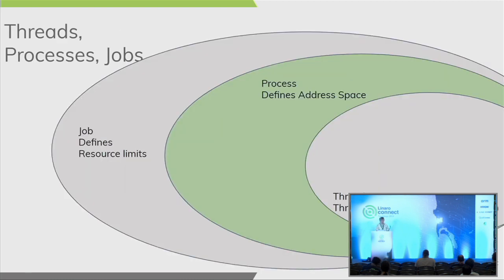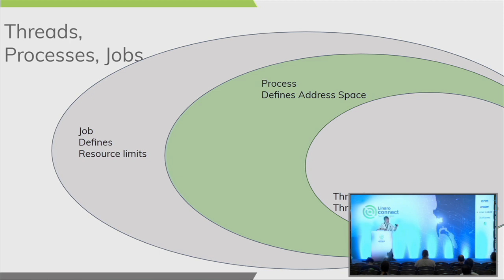Let's talk about threads, processes, and jobs. A thread is a unit of execution with stacks and registers, just as in Linux. A process has a defined address space including shared libraries and allocated memory. Then there's the concept of a job — the process fits inside the job, threads fit inside the process, and you can have multiple threads. Jobs have resource limits to keep any one thread from taking over the entire system.